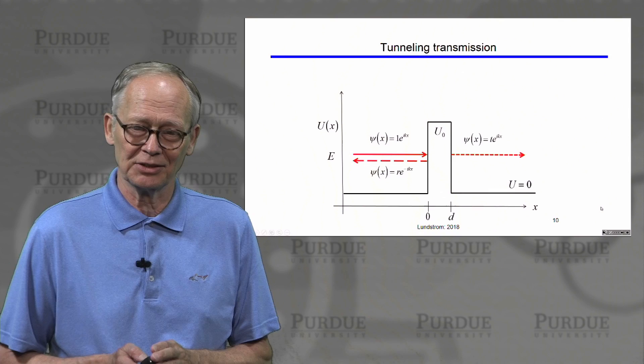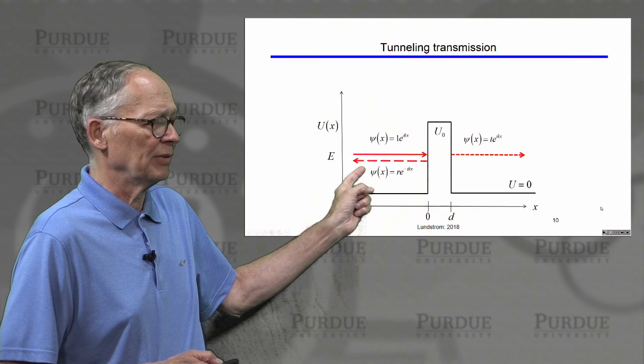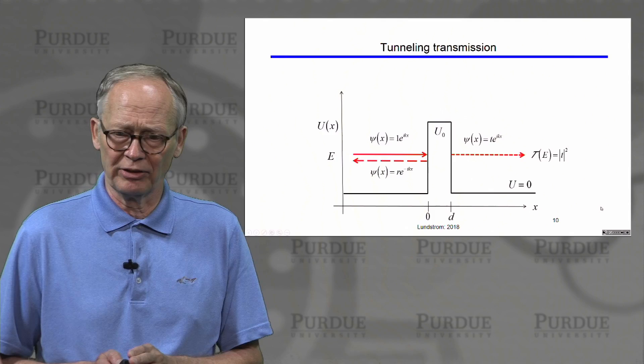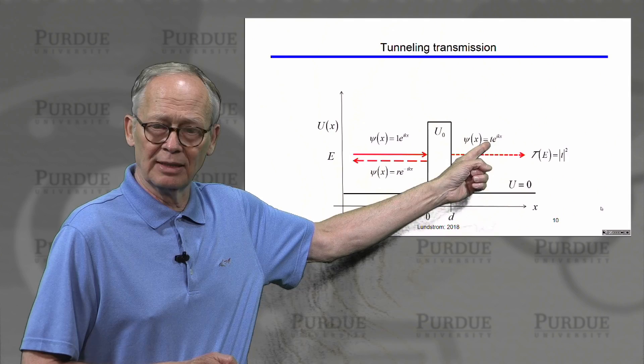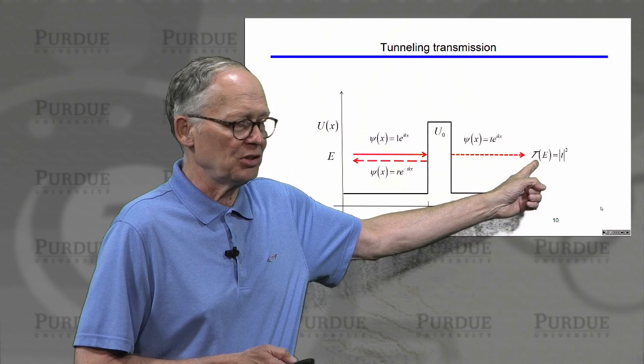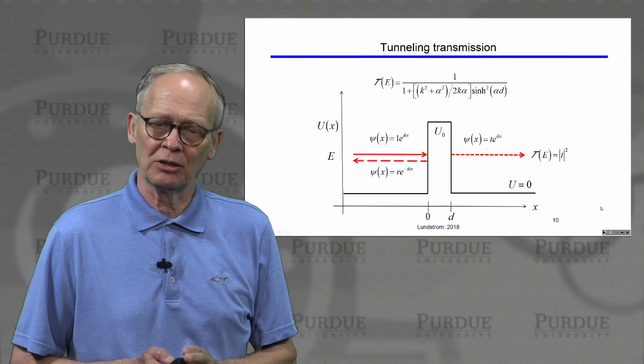Going through that algebra — which is a good exercise — we have our incident wave with amplitude one, a reflected wave with amplitude r, and a transmitted wave with amplitude t. By solving the system of four equations, we can calculate the various probabilities. In general, the amplitude t is a complex number. We are looking for the probability that the flux of electrons is transmitted, a real number between 0 and 1. This is the transmission probability, capital T, which equals the magnitude of little t squared. Going through the algebra gives a rather complicated-looking expression.